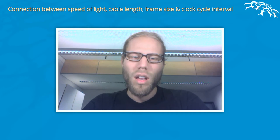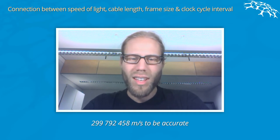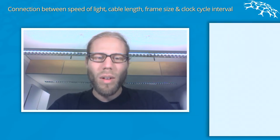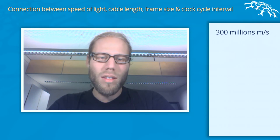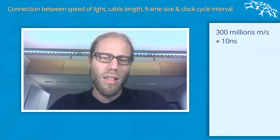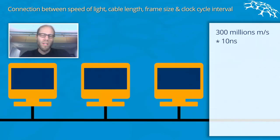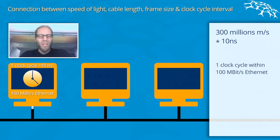The speed of light is approximately 300 million meters per second. For sending one bit at 100 megabit Ethernet, you have 10 nanoseconds of time. Multiplying these together, you can see that within one clock cycle the signal would have traveled something like three meters.